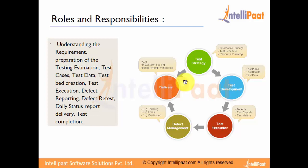Once we execute the test plans, there might be certain scenarios where the actual output is not as per the expected output. Those things are called defects. Whenever there is a defect, we need to log those defects and maintain the matrices for them. All these things fall under defect management, which includes bug tracking, bug fixing, and bug verification.